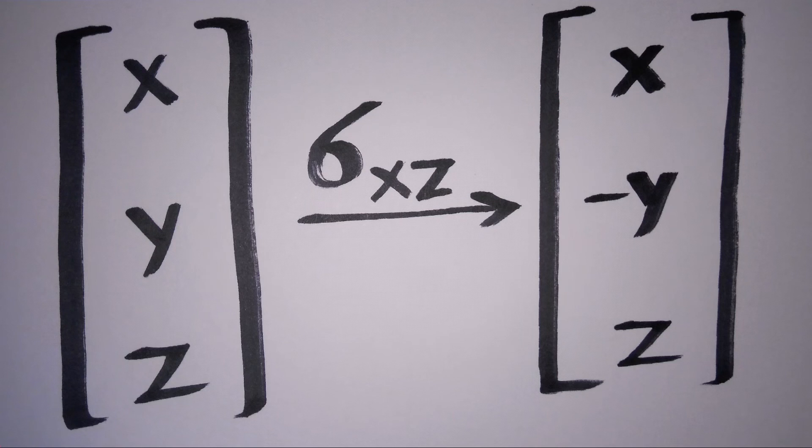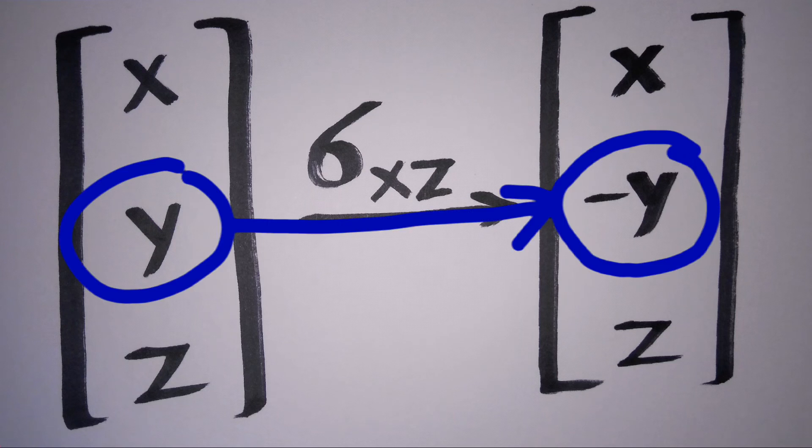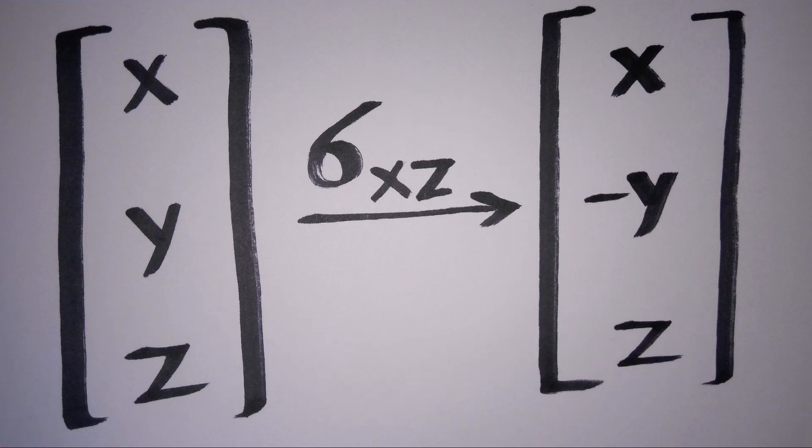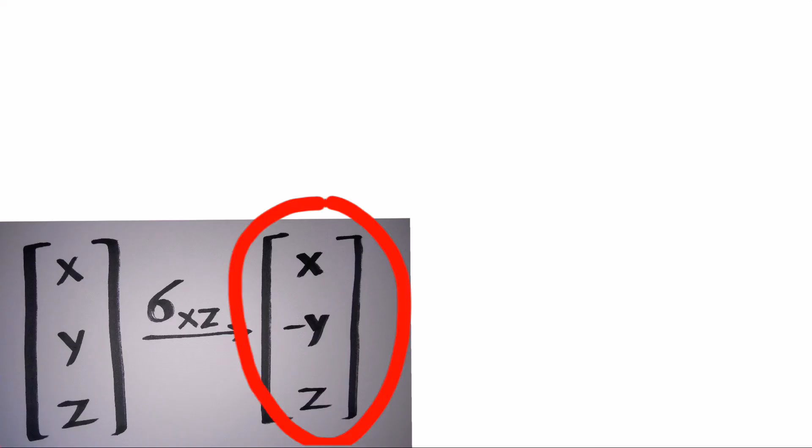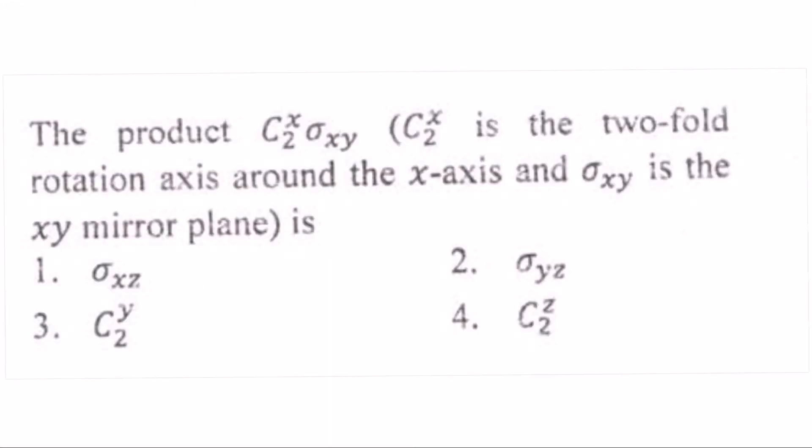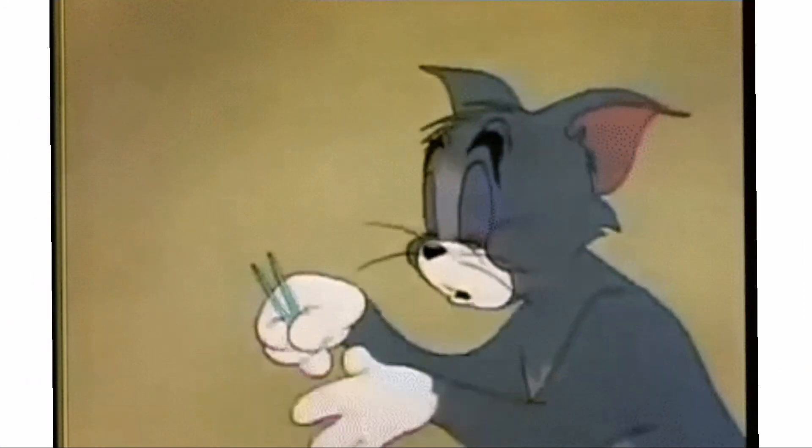Y turns to negative y and z remains as it is. When we compare this to the answer that we got for the operation C2x and sigma xy, they are same. So option A is the right choice.